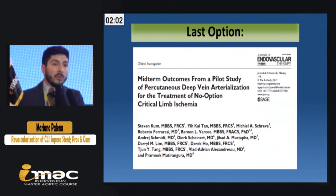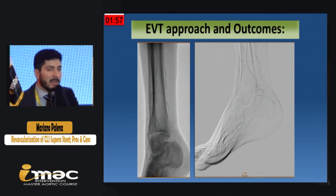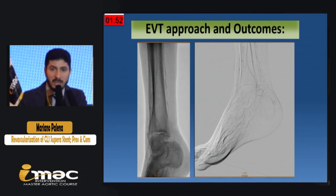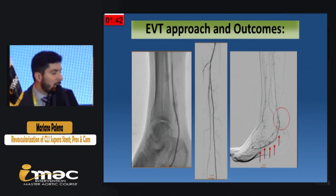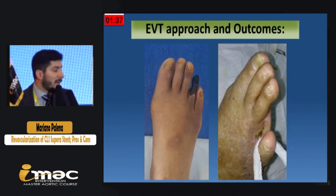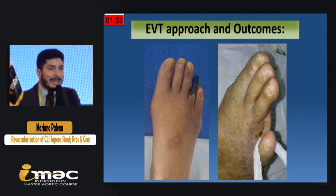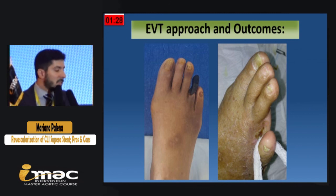The last option for the patient without option is deep vein arterialization. This is a case I did in Mexico three years ago in which I failed to do any type of arterial revascularization. So I connected the posterior tibial artery to the plantar vein, dilated everything, and obtained flow. The patient, who presented with gangrene in the fourth toe, received an amputation and healed after six months. The healing time is longer, but at least we can achieve a result.